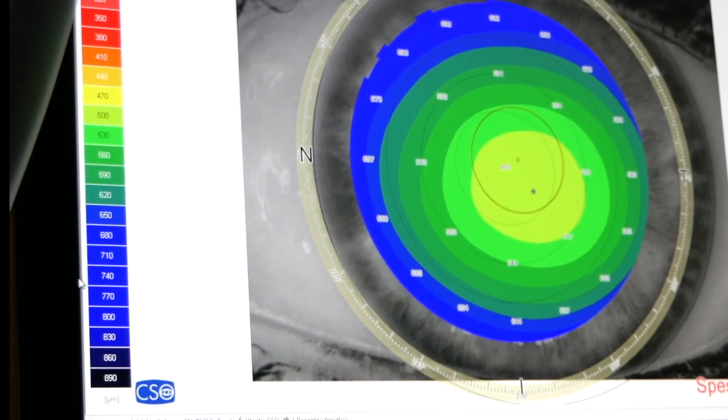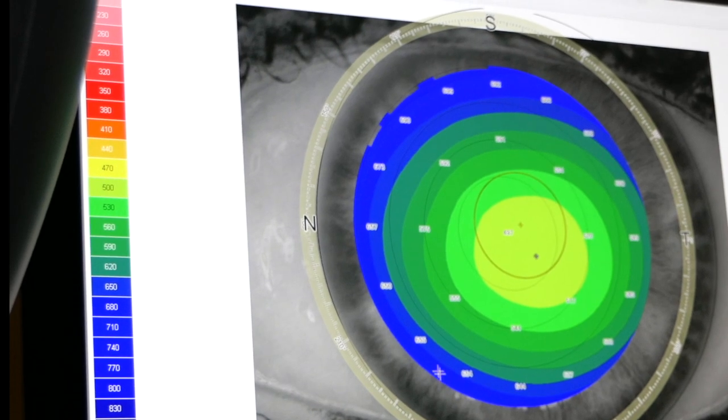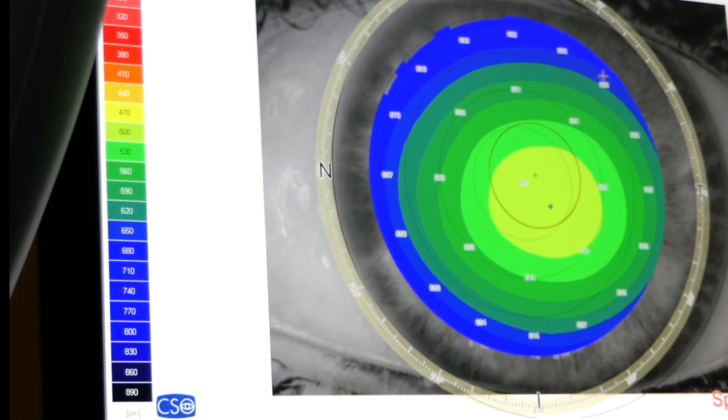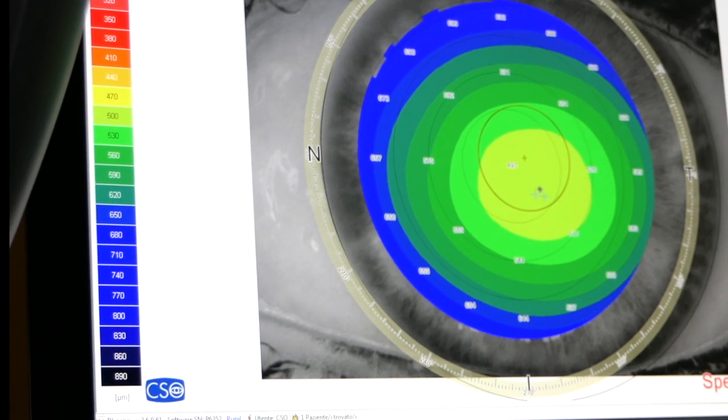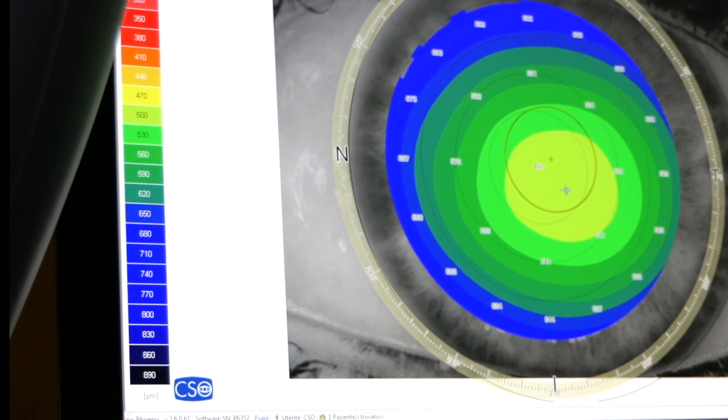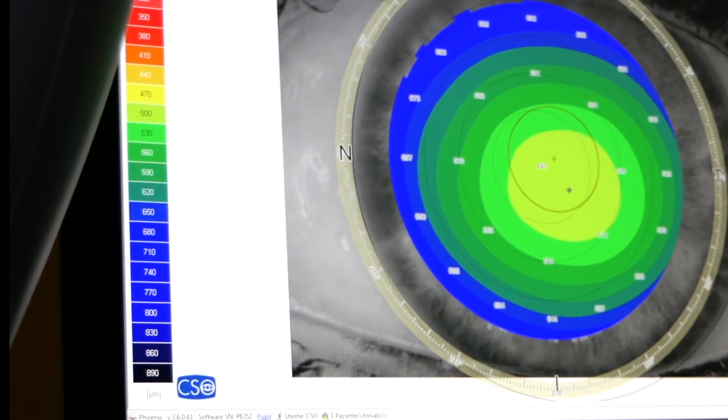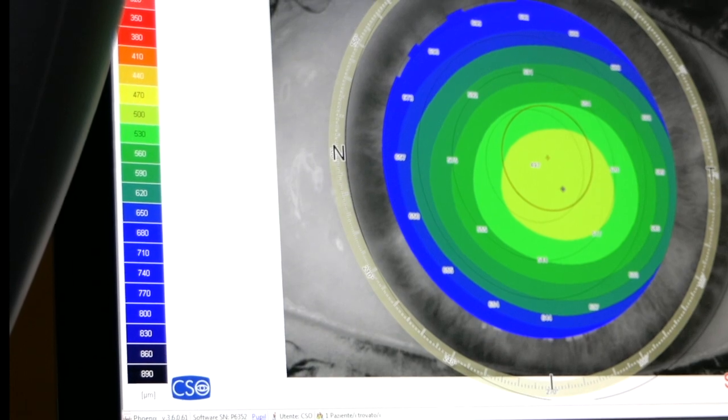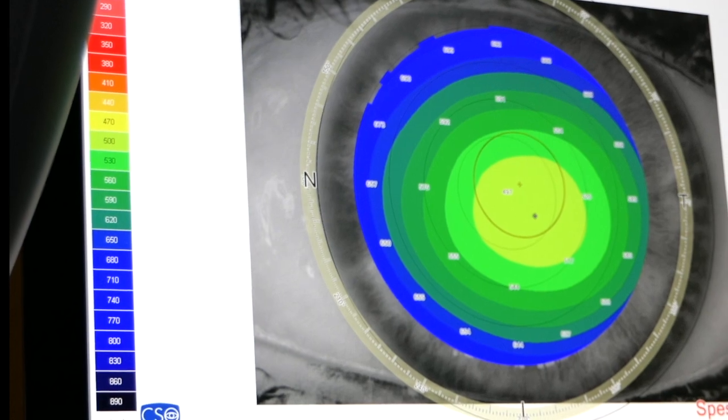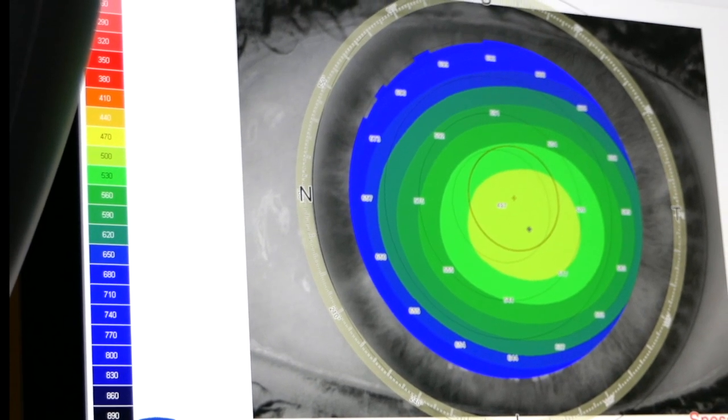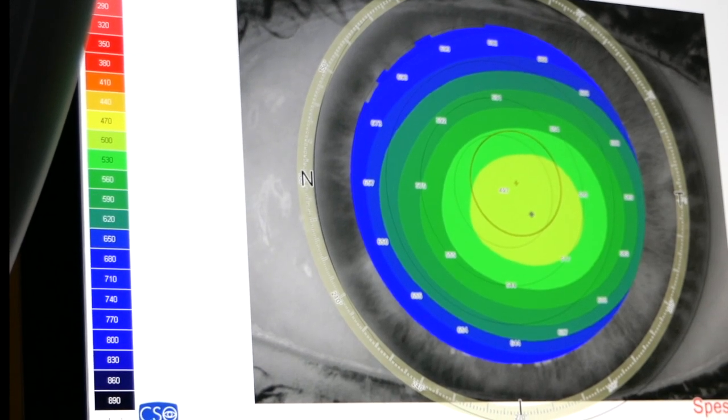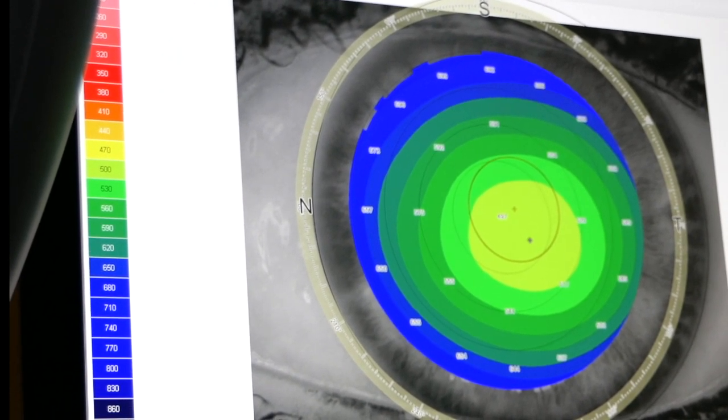As can be seen from this representation, this corneal thickness, also called pachymetry, the thicker the cornea is, the more one goes to the periphery. The blue colors are represented in the most peripheral part of the cornea, and the thinner it is, the more it goes towards the center, and the thinnest point is represented here.